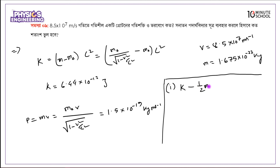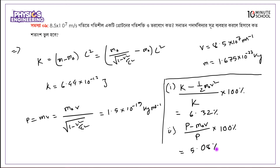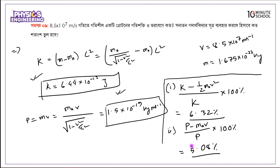The percentage difference for kinetic energy: (K minus half m0 v squared) divided by K times 100 percent gives 3.32 percent. For momentum, the percentage difference (p minus m0 v) over p times 100 percent gives 5.08 percent. So the relativistic kinetic energy error is 3.32% and the relativistic momentum error is 5.08%.